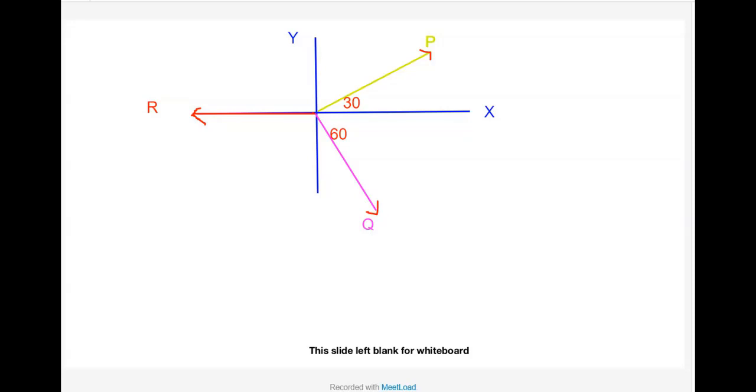If I resolve the first force P into its components, then I must take this option that I will draw a horizontal line and then I will draw a vertical line. And then I will say that these two components are, it must be P cos 30, that is P sin 30, is it? Yes.